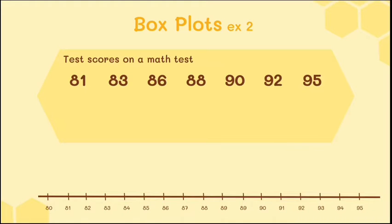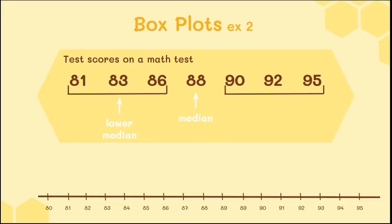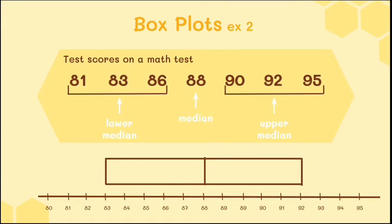Let's try one more — test scores on a math test. We first find the median: with three values below and three values above, the median is 88, which splits the data into two sections. The lower median of 81, 83, 86 is 83, and the upper median of 90, 92, 95 is 92. We draw lines at 83, 88, and 92 to form our box, then extend lines to the minimum of 81 and maximum of 95. That becomes our box plot.